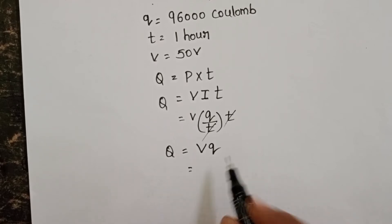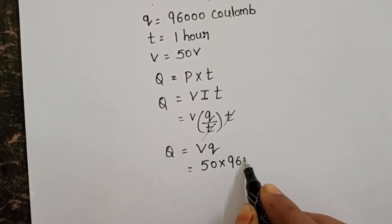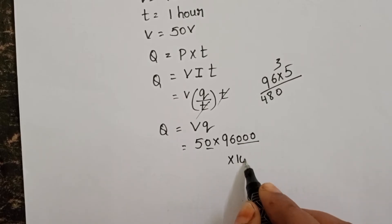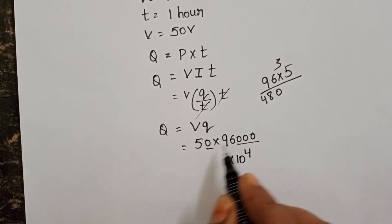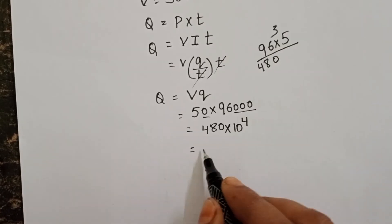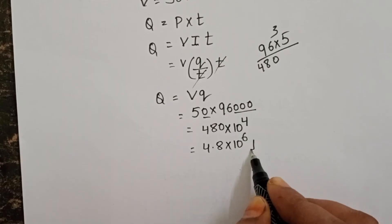Substitute the values: electric potential is 50 volts and charge is 96000 coulombs. We can write this with four zeros as 96 times 10^4. 96 times 5 equals 480, giving us 4.8 times 10^6 joules.